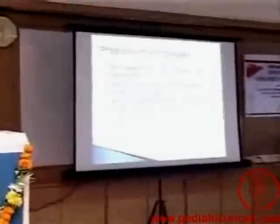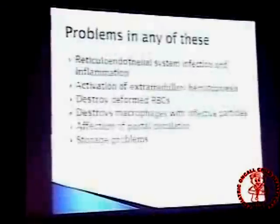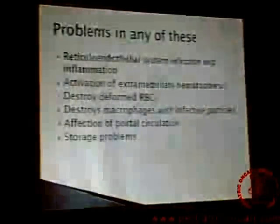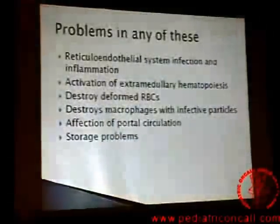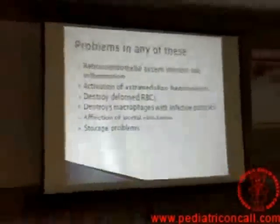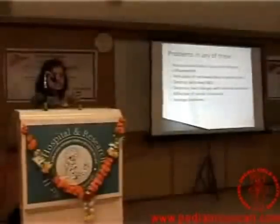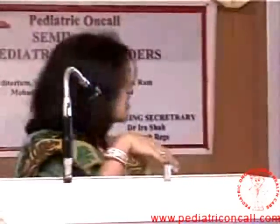So why does splenomegaly occur? If there is reticuloendothelial system involvement — infection or inflammation — common infections that affect this system include malaria, brucella, Kala-azar, infectious mononucleosis, typhoid, and infective endocarditis. We have been taught mild splenomegaly from malaria or infective endocarditis and massive splenomegaly from Kala-azar. But what we should remember is the type of problems causing splenomegaly. Inflammation includes autoimmune problems like rheumatoid arthritis and SLE. Activation of extramedullary haematopoiesis includes haemolytic anaemia such as thalassaemia and hereditary spherocytosis.